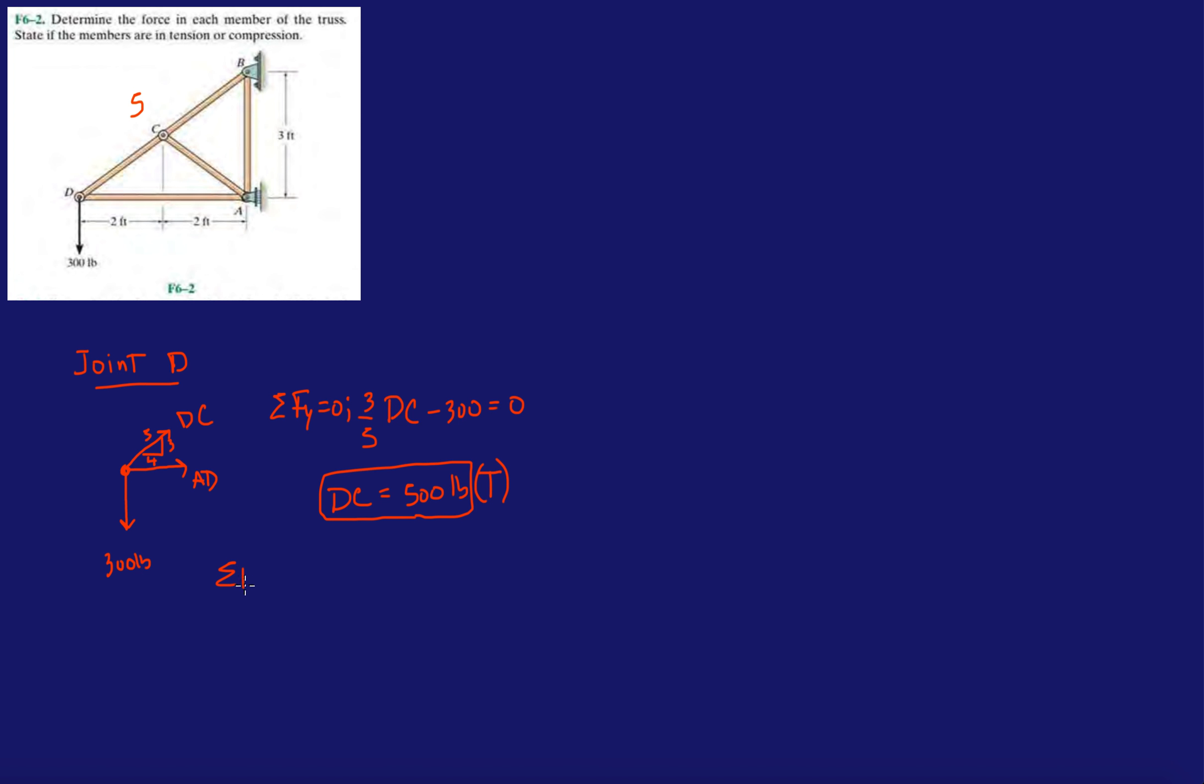So now, forces in the X direction. Now, forces in the X, let's see, we have the X component of DC, so it's going to be 500, positive, 4/5 plus AD equals 0.